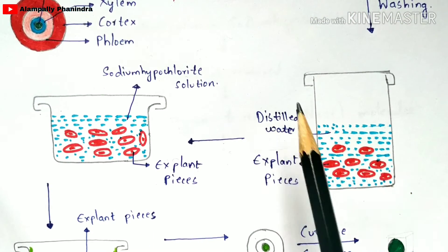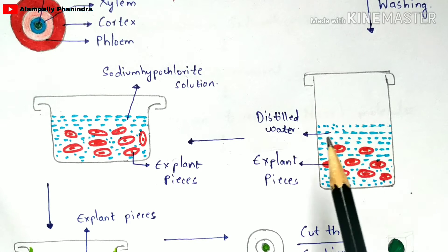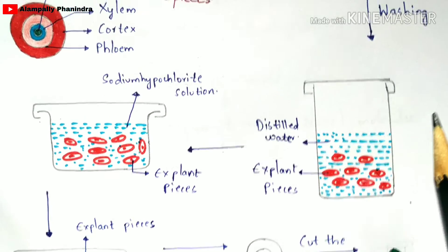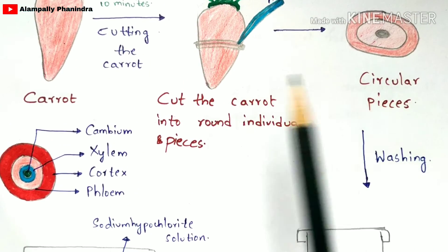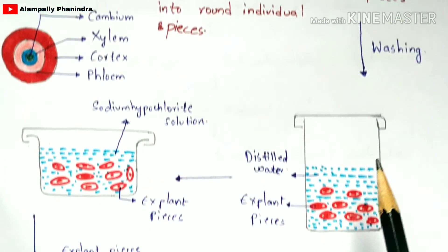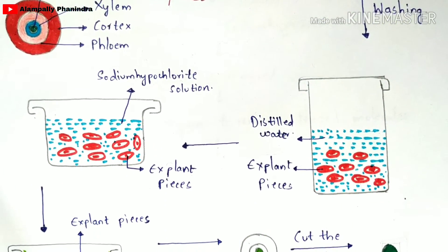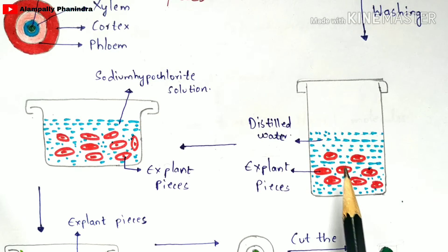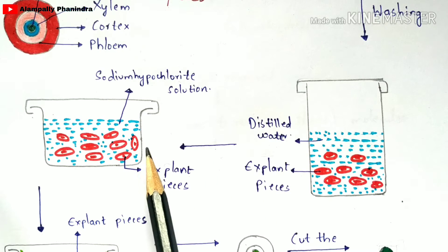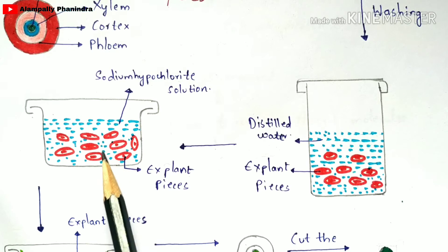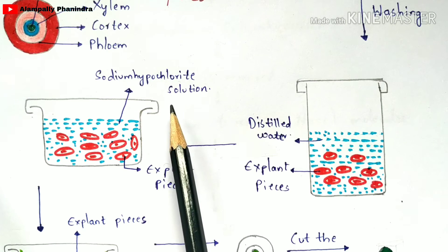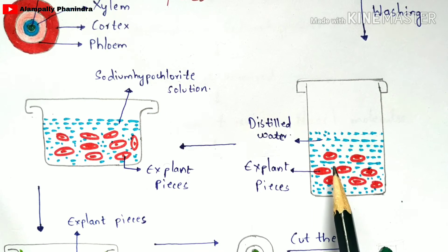Take a beaker and add distilled water to it. The circular explant pieces cut from the carrot are added to this distilled water and washed. After washing, these explant pieces are removed and transferred into another beaker containing sodium hypochlorite solution.